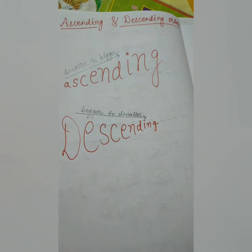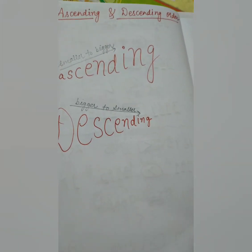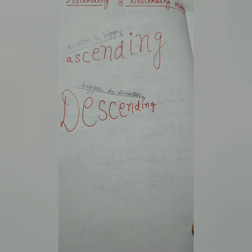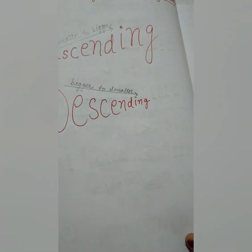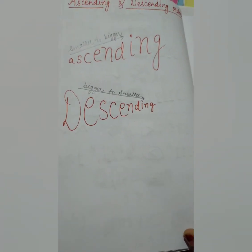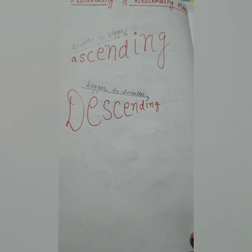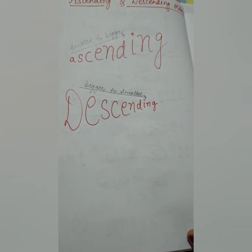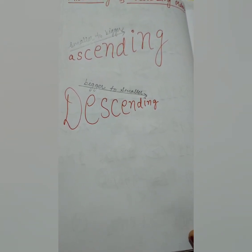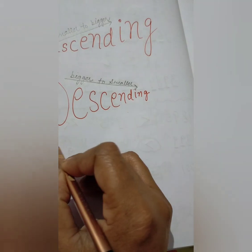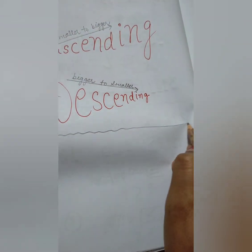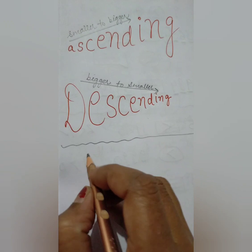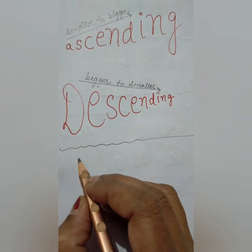Ascending order and descending order is a very important topic in maths, so you must learn it and do the sums of this concept carefully. Here I will explain how to write ascending and descending order with the help of examples, so see the examples carefully so that this concept may be more clear to you.